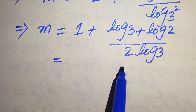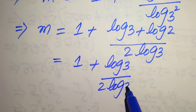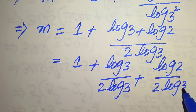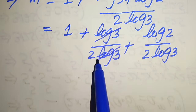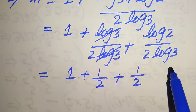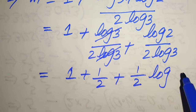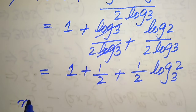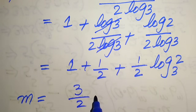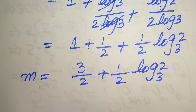Breaking the fraction, we get 1 plus log 3 over 2 times log 3, plus log 2 over 2 times log 3. The log 3 terms cancel, leaving 1 plus 1 over 2, plus 1 over 2 times log 2 over log 3. We apply the change-of-base property to write log 2 over log 3 as log base 3 of 2. Taking the LCM, 1 plus 1 over 2 equals 3 over 2, so m equals 3 over 2 plus 1 over 2 times log base 3 of 2.